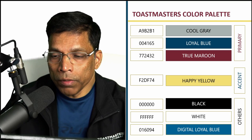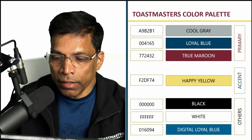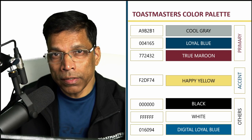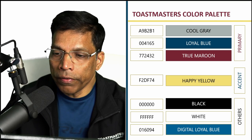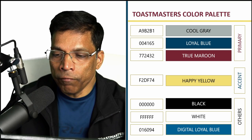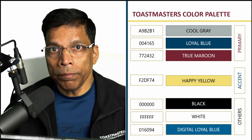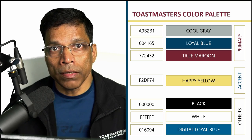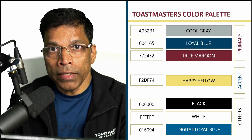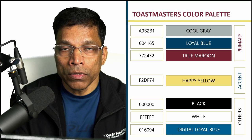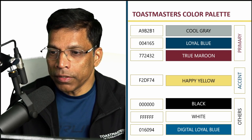One important note about these colors: loyal blue, true maroon, black, and digital loyal blue are considered dark colors, while cool gray, happy yellow, and white are considered light colors. When you have a background color and want to write something on it, make sure you write with a light color on a dark background or a dark color on a light background, as shown in this example.